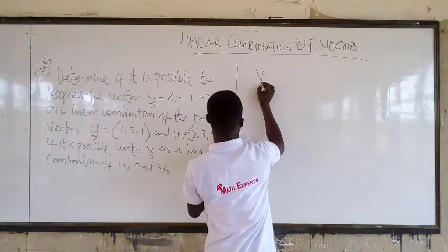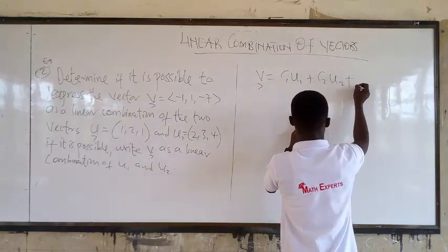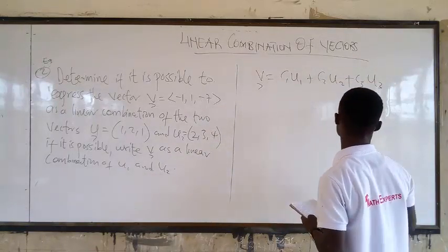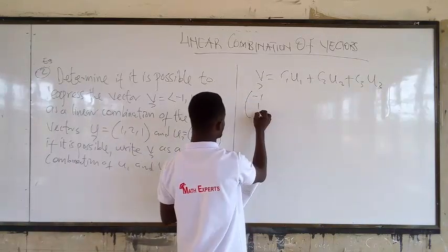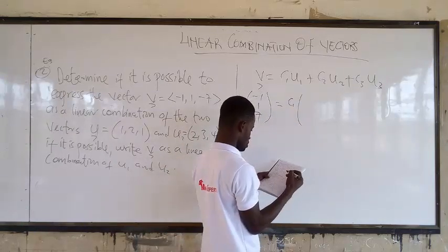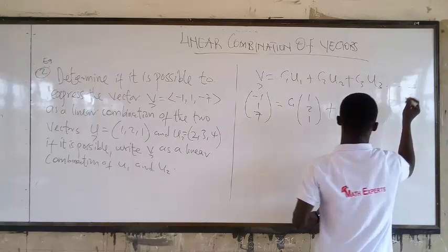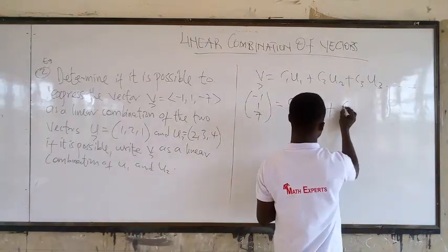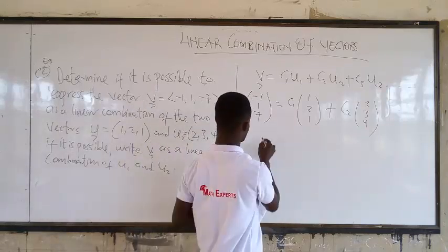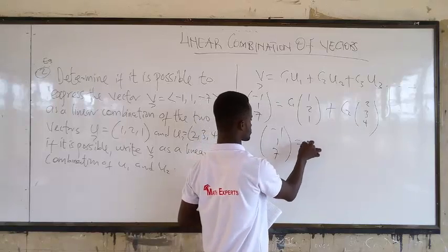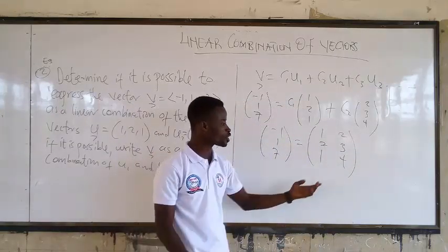So we start with V equals C1, U1 plus C2, U2 plus C3, U3. But here we know that. So let's continue. So the V is negative 1, 1, 7. C1, then we have 1, 2, plus here. We know that this can't happen. I repeat it just to generalize something. But you can ignore that part. So here is C2, 2, 3, 4. So this is what we have. So we can write it in the matrix form as negative 1, 1, 7, 1, 2, 1, 2, 3, 4. So you can see that the matrix form here is not a square matrix.